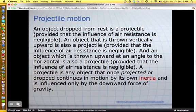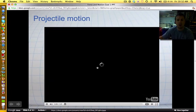So an object dropped from rest is considered a projectile, provided that the influence of air resistance is negligible. So we're assuming that we're not talking a whole lot about air resistance right now. An object that is thrown vertically upward is also a projectile, and the object thrown upward at an angle, which means if you throw it to somebody. Okay, you can think of a quarterback throwing the ball to a receiver. A projectile is any object that once projected or dropped continues in motion by its own inertia. It is influenced only by gravity, which means that as soon as that person lets go of that ball, the only thing that's acting on it is gravity.